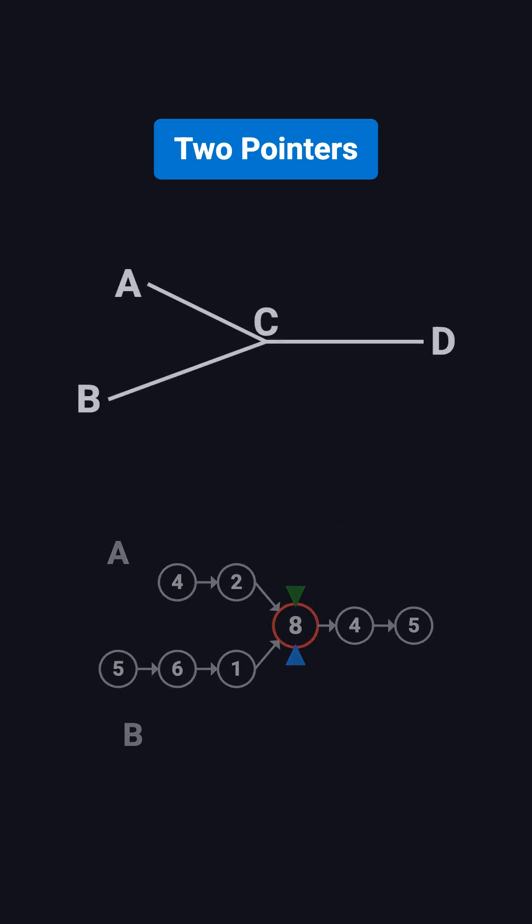To understand why this works, imagine three line segments: AC, BC, and CD. Here, AC is the unique part of list A, BC is the unique part of list B, and CD is the common part.